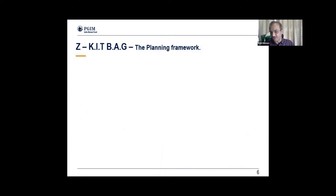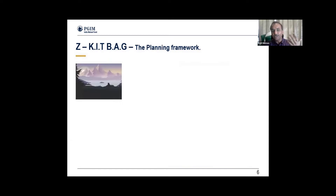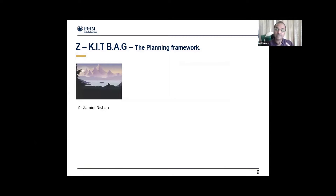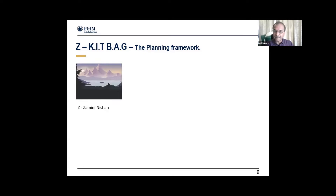Z-KITBAG is an acronym. Z stands for Zamini Nishan — the lay of the land, the theater of war, the domain you're operating in, whether mountains, seas, forests, or city. The first step is to understand the entire domain you're going to operate in: the directions and everything about that domain you should know. That is the first step of mission planning.